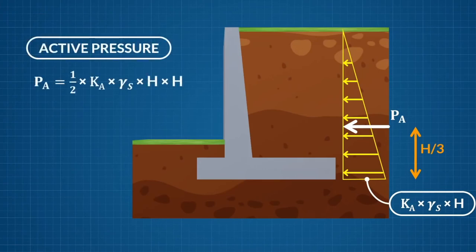The magnitude of this force will be the area of the triangle. The area of the active earth pressure triangle is half times base times height.